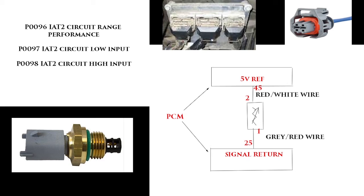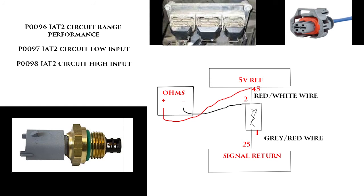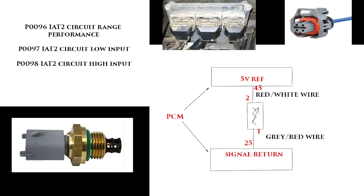If you do not get a P0097, then you want to proceed to checking the wiring. The next step would be checking your signal circuit for an open — you'd check from pin 45 at the computer to pin 2 at the intake air temp sensor, and check for resistance. You want 5 ohms or less. If you have more than that, you most likely have a break in the wire. You could also have a chafed wire creating a short to ground, so with connectors disconnected you can check to battery ground as well.